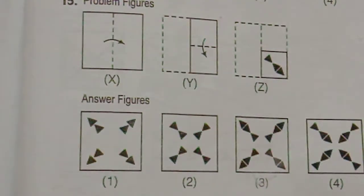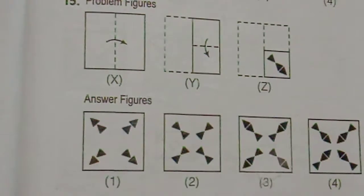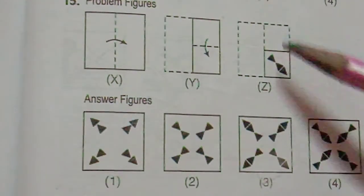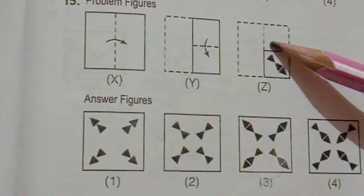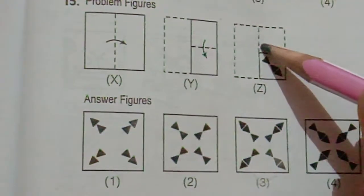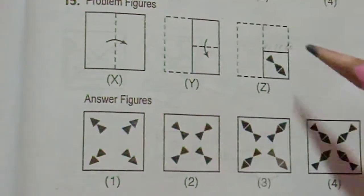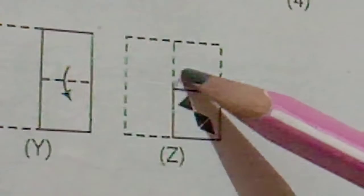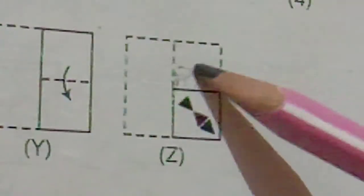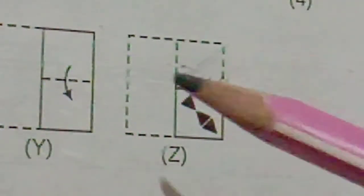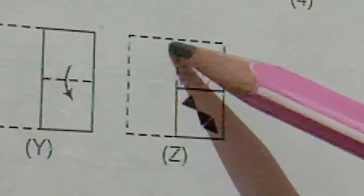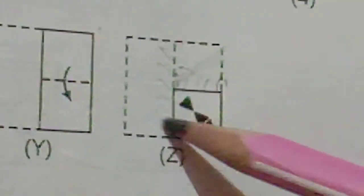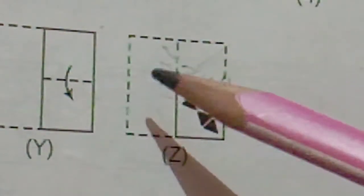So what will be the answer? As I told you, first we have to think of this as a mirror image. The first folding is here — now this part we have to take as a mirror. So this will come here, this figure will come here in this direction. And the second thing — we have to take this as a mirror image, so this and this will come here.